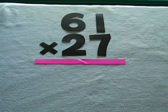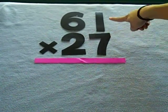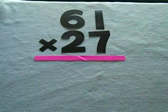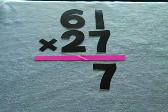Step 1. Multiply the first place value. 7 times 1 is 7. 7 times 6 is 42.